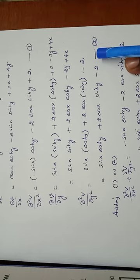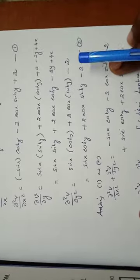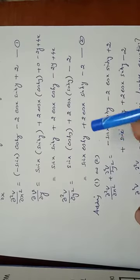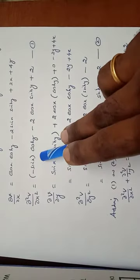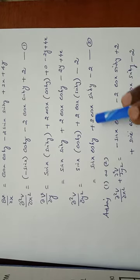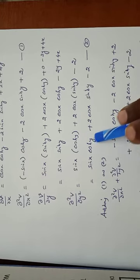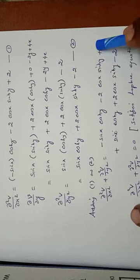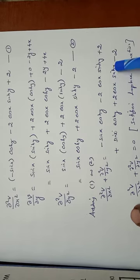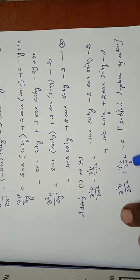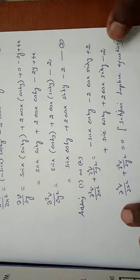This given function satisfies the Laplace equation. Adding equation 1 and equation 2, left-hand side as well as right-hand side: ∂²v/∂x² plus ∂²v/∂y² equals minus sin x cosh y minus 2 cos x sinh y plus 2 plus sin x cosh y plus 2 cos x sinh y minus 2. The plus 2 and minus 2 cancel, the sin x cosh y terms cancel, and the 2 cos x sinh y terms cancel. So ∂²v/∂x² plus ∂²v/∂y² equals 0. This satisfies the Laplace equation.